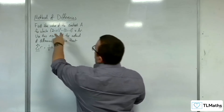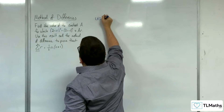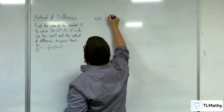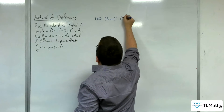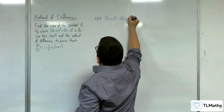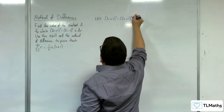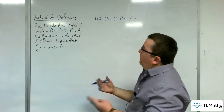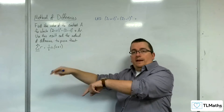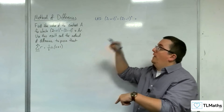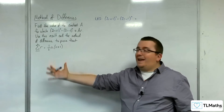Find the value of the constant a for which (2r+1)² take away (2r-1)² is equivalent to a times r. If we have a look at the left-hand side, we want to expand those brackets out and hopefully get into the form of something times r, and then I'll be able to identify a.